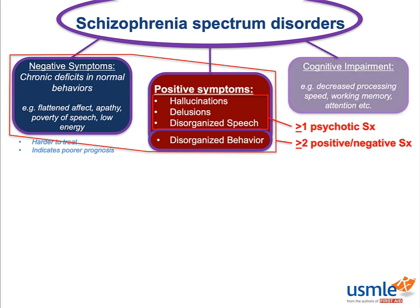While cognitive impairment is not a factor in the diagnosis of schizophrenia, it is increasingly being recognized as an important part of why this disease is so disabling. Completely apart from the positive and negative symptoms, these patients develop intellectual and learning-related deficits that put most schizophrenia patients around one or two standard deviations below the general population. Addressing these issues with occupational counseling and special education is starting to become a very important part of managing these patients.